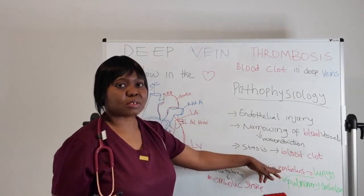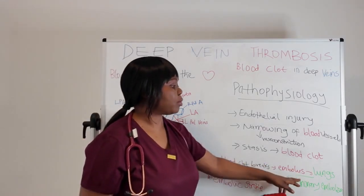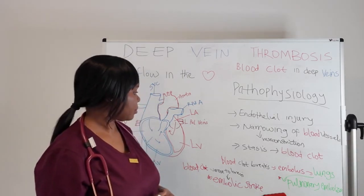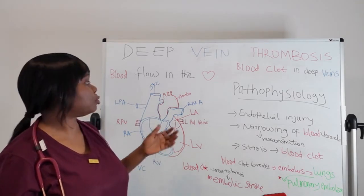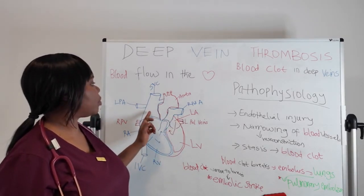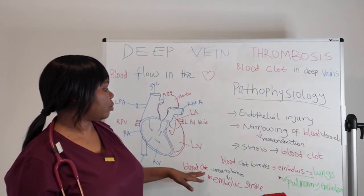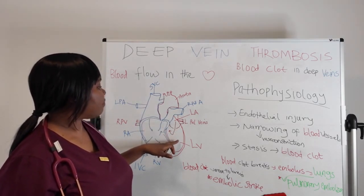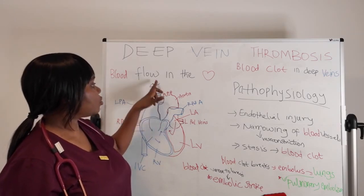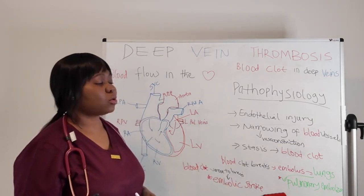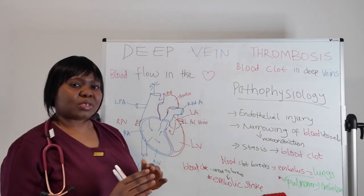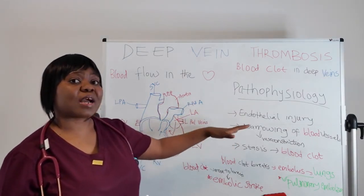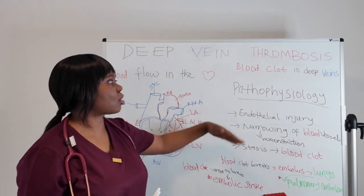When a clot breaks off it is called an embolus — the blood clot is in motion. If it travels through the pulmonary circulation to the lungs, it causes pulmonary embolism, which is a dangerous emergency that can lead to death. In conditions like atrial septal defect, a clot can shunt from the right atrium to the left and travel to the brain, causing an embolic stroke. This is why we need to understand Virchow's triad.